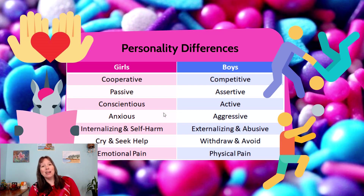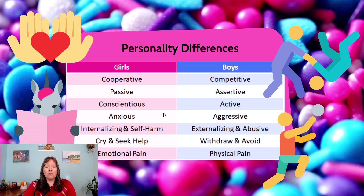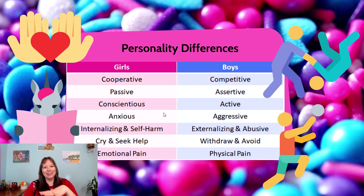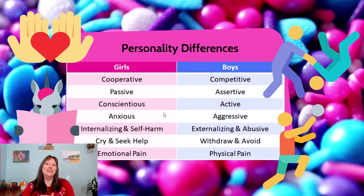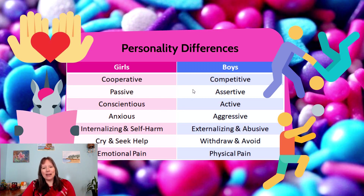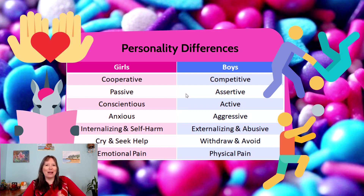Personality differences could be socialized or related to biology. Girls tend to be more cooperative and passive, related to higher agreeableness and higher oxytocin levels. Oxytocin makes us want to smooth things out and get along with others, so there may be a biological basis — but girls are also socialized early to play with dolls, take care of others, and be nice. In comparison, boys tend to be more competitive and assertive, which might be related to testosterone and dominance biologically, but also stems from being socialized and reinforced for being assertive, brave, and taking charge.